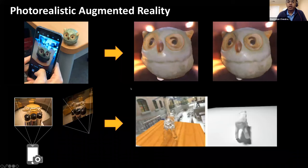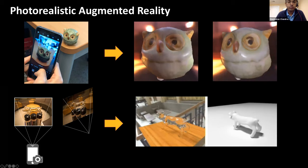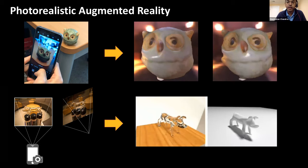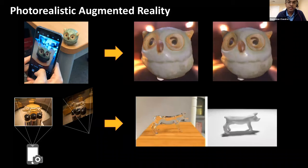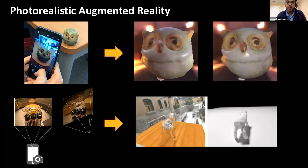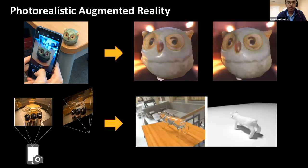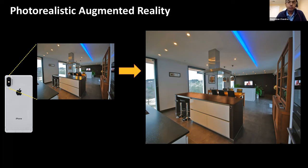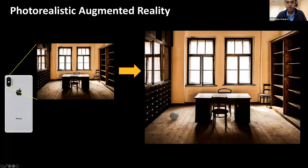Some of these applications require a very high degree of photorealism. For example, one might want to sell a shiny object on eBay, and the buyer might want to visualize how it looks under different lighting. Or the seller might want to upload a 3D model of challenging shapes like transparent objects from just a few images. There can also be interior design applications, such as visualizing a kitchen countertop with a different material or placing new furniture in a room.